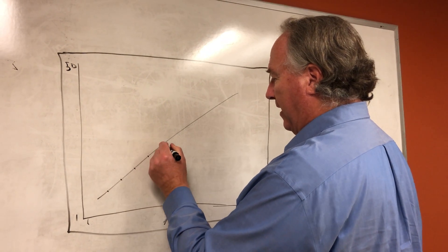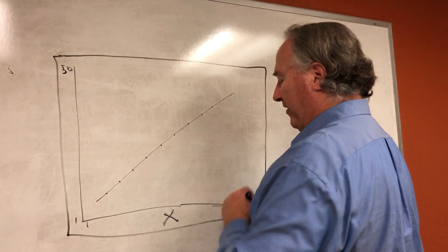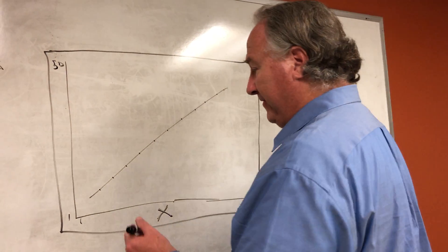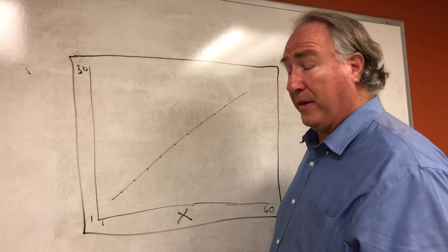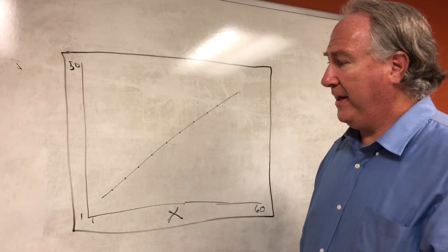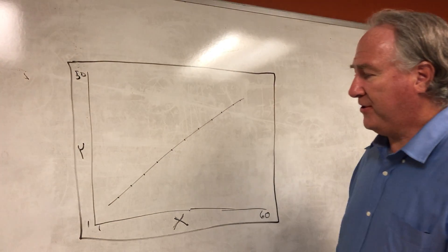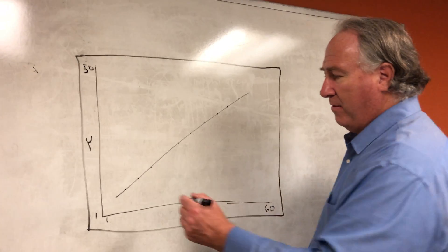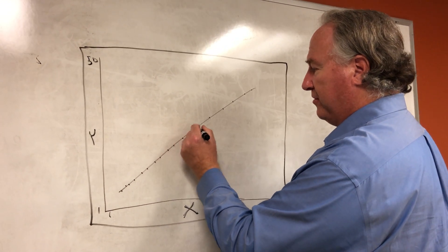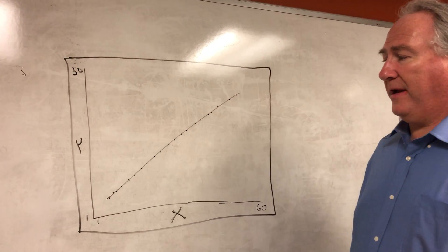The assumption of homoscedasticity is essentially that all along the regression line we have predicted values coming out of our model. Our model is a simple one — it consists of the constant and one predictor variable — and it predicts what a person's score is going to be on the outcome variable Y.